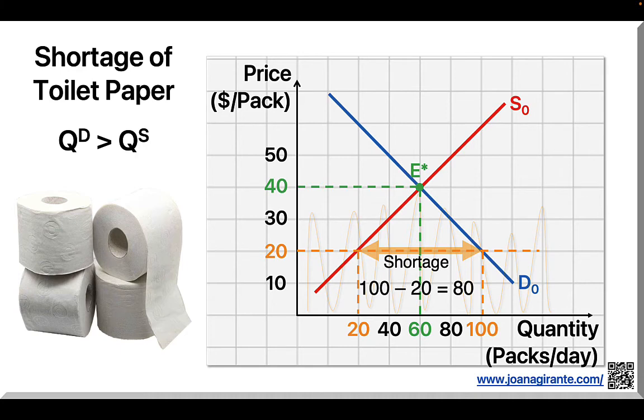This problem is caused by a price that is failing to clear the market, meaning it's failing to set quantity demanded equal to quantity supplied. Compared to equilibrium price of $40, this $20 price is too low. The problem would be resolved by a higher price.